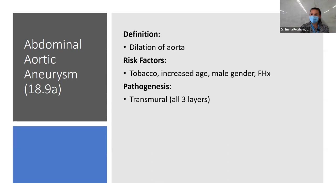Aortic dissection cardinal signs: tearing chest or stomach pain and unequal blood pressures — those are the two key clinical findings. Complications include ischemia, rupture, and death, or if the patient survives, regurgitation or cardiac tamponade. This is typically a surgical procedure. Arteriosclerosis is hardening of the arteries — arterial wall thickening and loss of elasticity. Atherosclerosis adds plaque buildup on top of that.